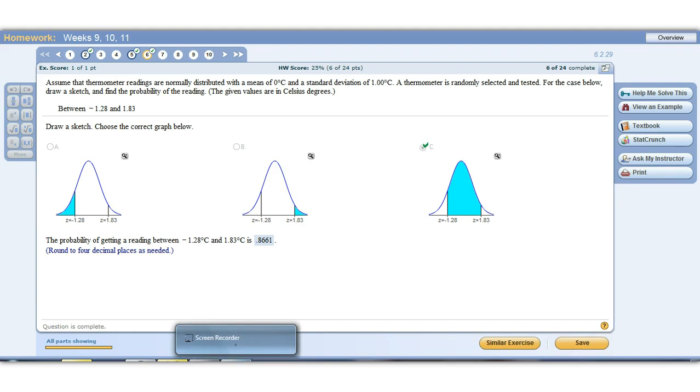All right. So if you have any questions about these types of problems, just send me an email or let me know in class. All of them are similar to this when you see these z's. All you need is those first two numbers from the standard normal distribution if you're finding probabilities.